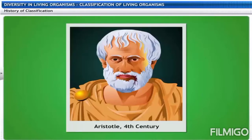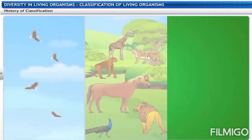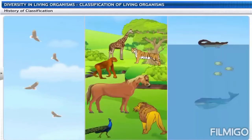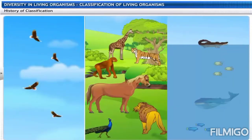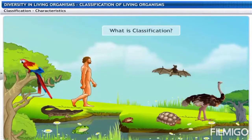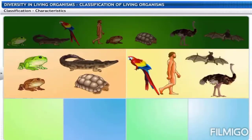For the first time, in the fourth century, a Greek philosopher Aristotle, who is also known as the father of biology, classified animals based on whether they live on land, in water, or in air. However, this classification was unscientific and not accurate because it placed unrelated organisms like fishes, crocodiles and whales, living in the same habitat, into one single group. Classification is the division of living organisms on the basis of characteristics into different groups and subgroups.